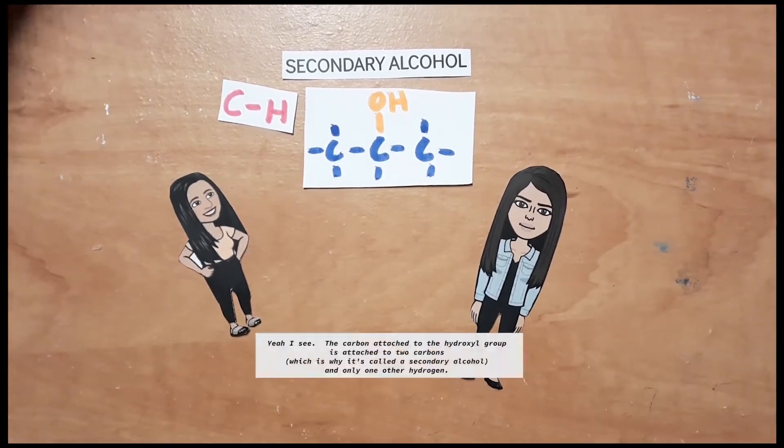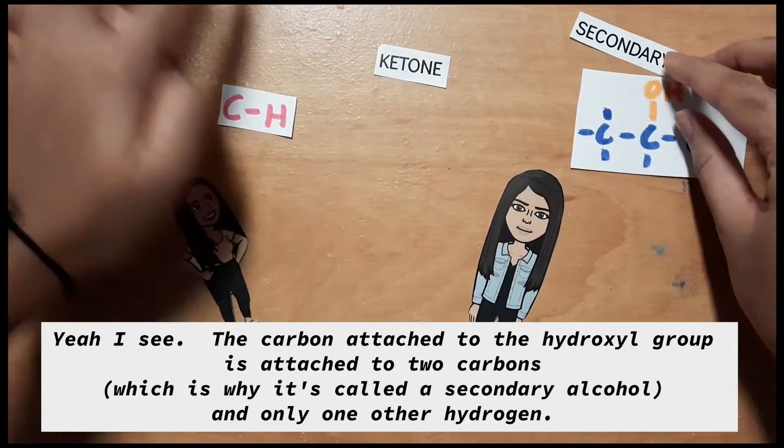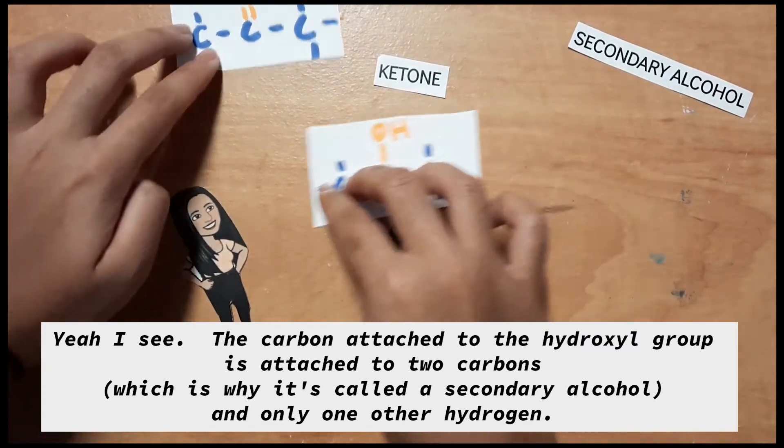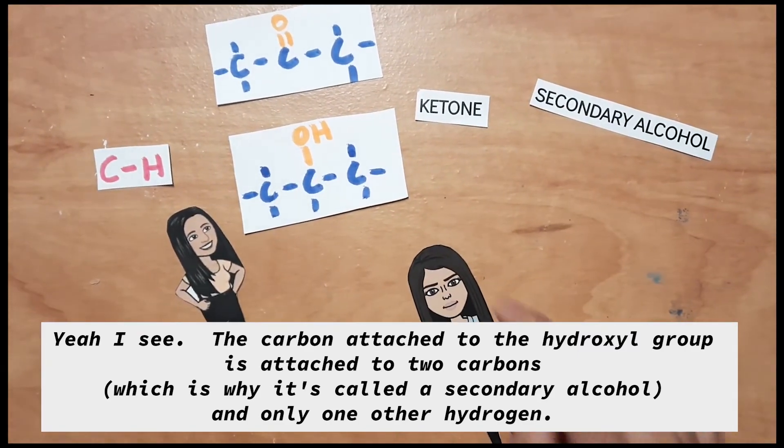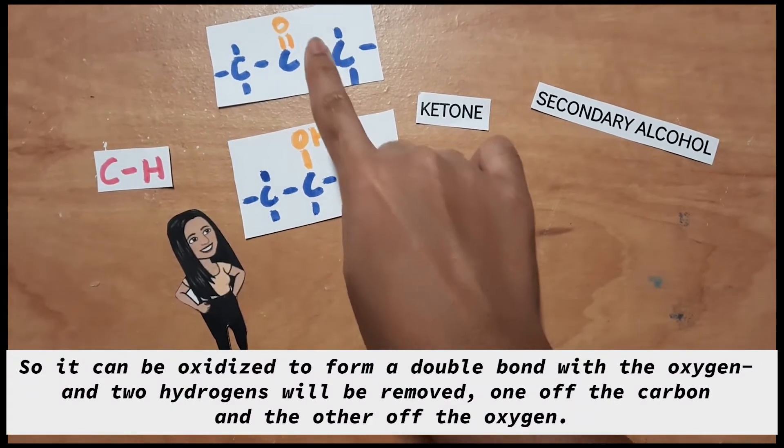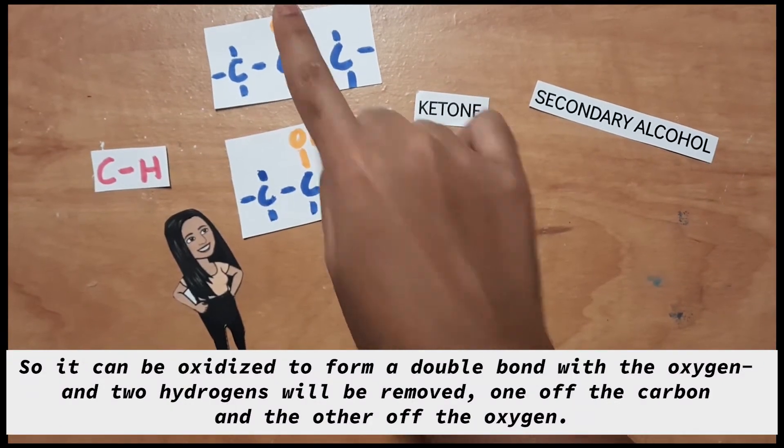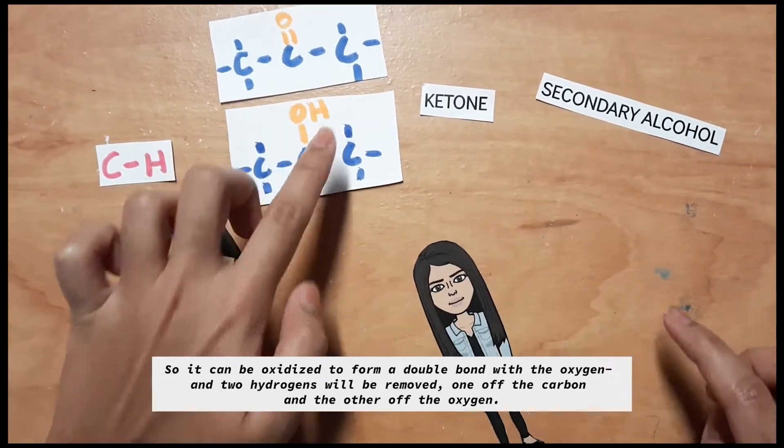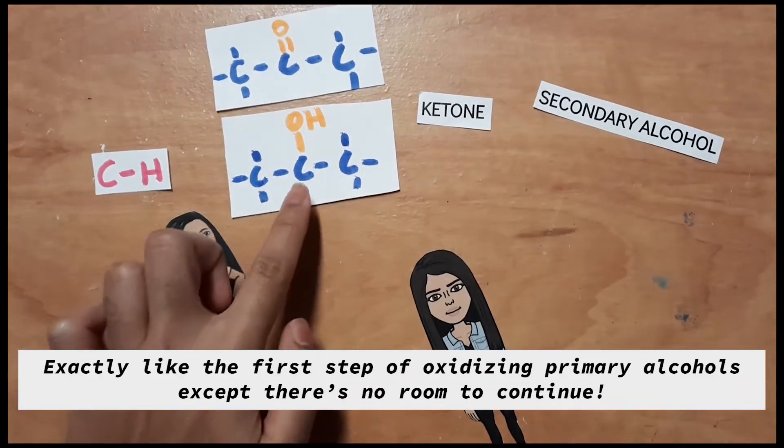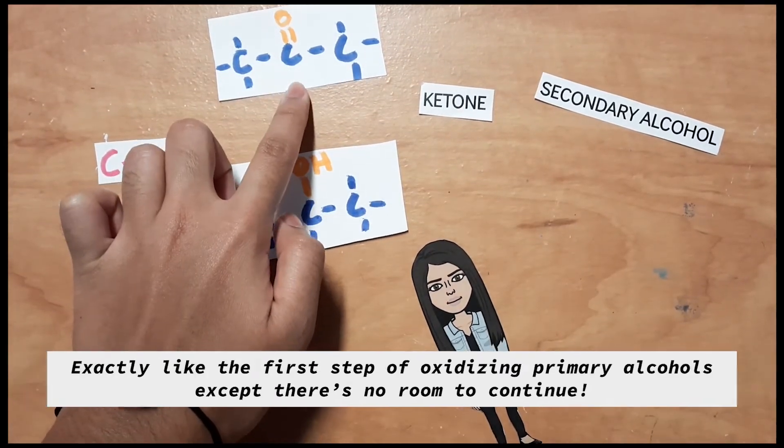Yeah, I see. The carbon attached to the hydroxyl group is attached to two carbons, which is why it's called a secondary alcohol, and only one other hydrogen. So, it can be oxidized to form a double bond with oxygen, and two hydrogens will be removed, one off the carbon, and the other off the oxygen. Exactly like the first step of oxidizing primary alcohols, except there's no room to continue.